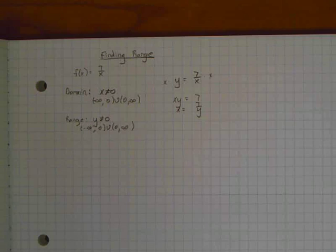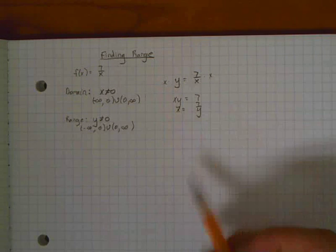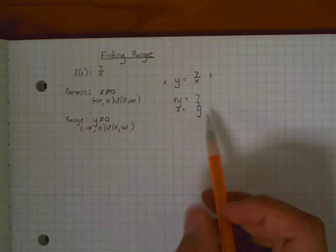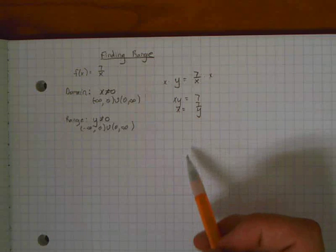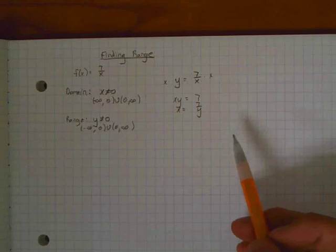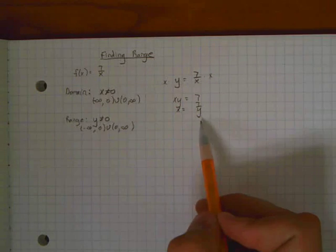And then you can sort of ask yourself the same questions for range that you did for domain. So you're going to ask yourself, what values of y will make me divide by 0? What values of y will give me non-real answers? And looking at this equation, x equals 7 divided by y, you can see right away that the value of y that will give you 0 in the denominator is y equals 0.